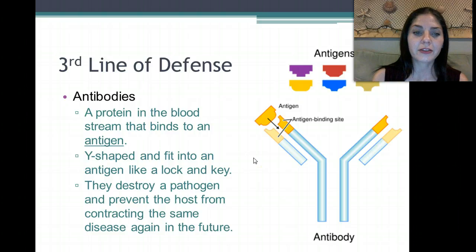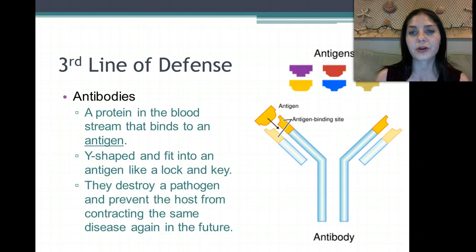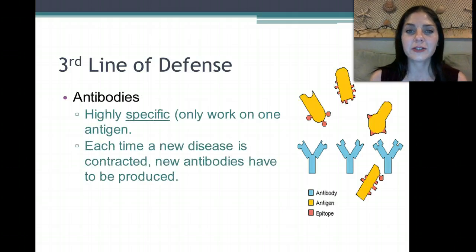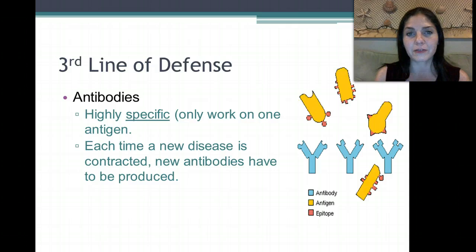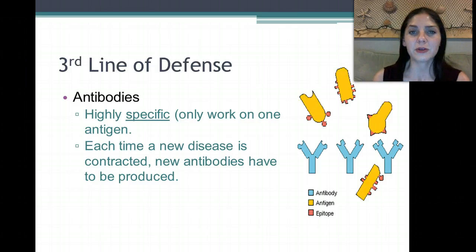Antibodies destroy the pathogen and prevent the host from contracting the same disease again in the future, meaning if you're exposed to the exact same sickness, you will have antibodies already made that know exactly how to destroy that pathogen. Antibodies are highly specific — they only work for one specific antigen, whether it's a bacteria or a virus. Each time a new disease is contracted, new antibodies have to be produced.